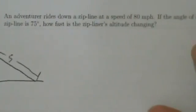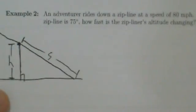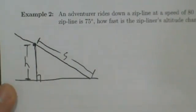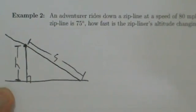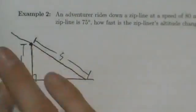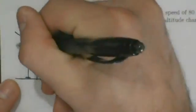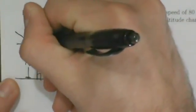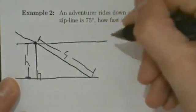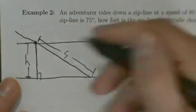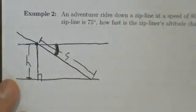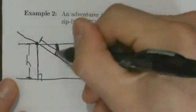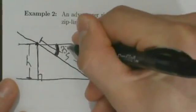The angle of depression of the zipline is 75 degrees. So what does angle of depression mean? Remember from trigonometry, the angle of depression is the angle made with the horizontal. So here, this will be the horizontal, and the angle of depression is going to be this angle in here. That's the angle of depression — and it's 75 degrees, we were told.